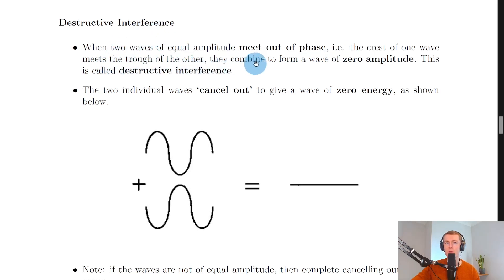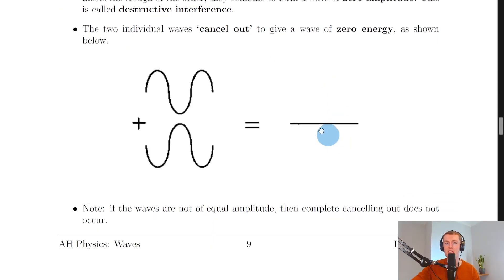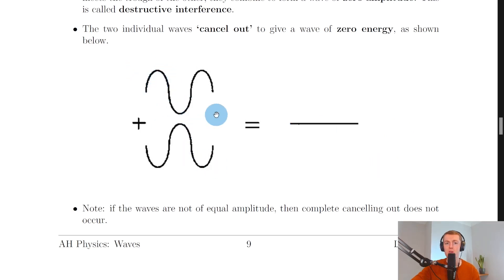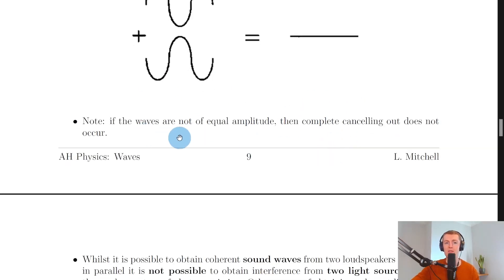Destructive interference occurs when two waves of equal amplitude meet out of phase — the crest of one wave meets the trough of the other — and they combine to form a wave of zero amplitude. Looking at the picture, the two individual waves cancel out to give zero energy or zero amplitude, shown as a straight line. You can see what looks like a sine wave and a negative sine wave overlapping.